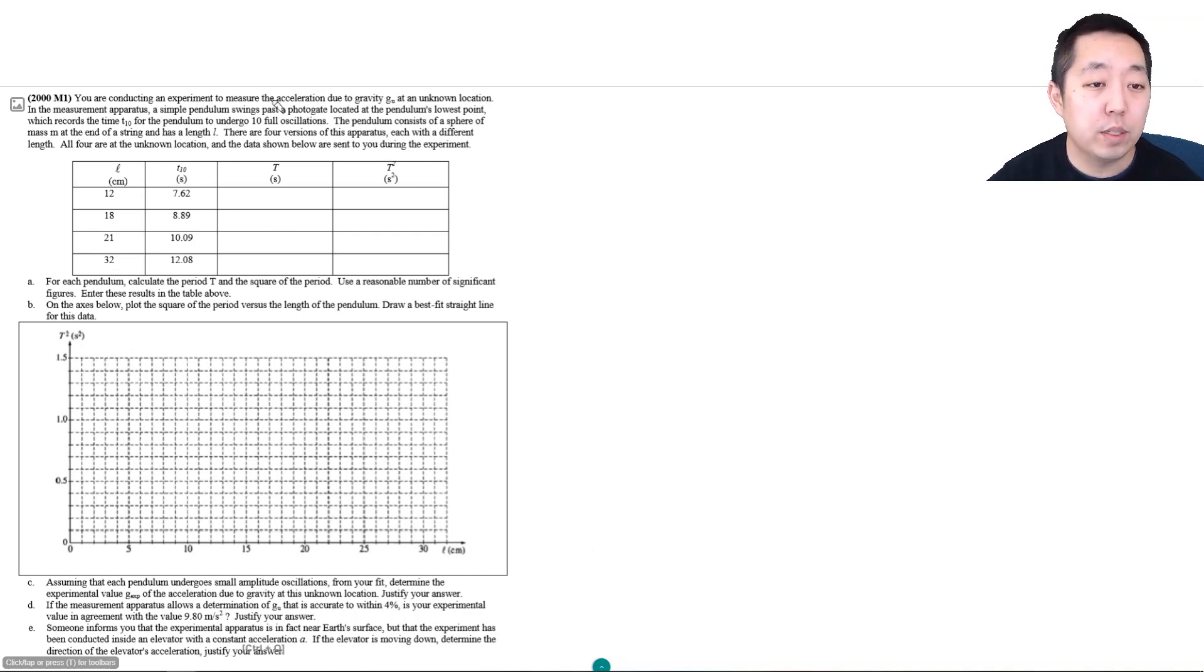You are conducting an experiment to measure the acceleration due to gravity g at an unknown location. The apparatus uses a simple pendulum swinging past a photogate at the lowest point, which records the time t10 for 10 full oscillations. There are four versions with different lengths, and we have data from the experiment. For each pendulum, calculate the period T and the square of the period using a reasonable number of significant figures.